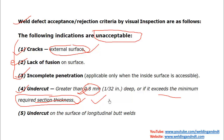For longitudinal butt welds specifically, undercut is not acceptable at all — any undercut on the surface of a longitudinal butt weld will be rejected.